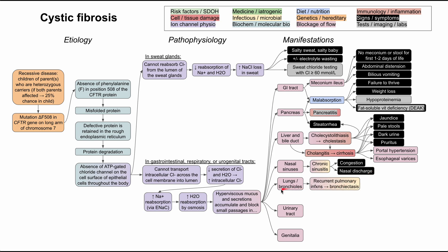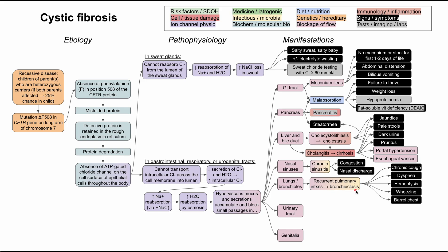The lungs are another major area affected by cystic fibrosis. It's typically the bronchioles that are involved, and you end up with recurrent pulmonary infections — bronchitis, typical and atypical pneumonias. Over time, this can lead to bronchiectasis, essentially chronic mucus plugging of your lungs, causing a nasty chronic cough, shortness of breath, coughing up blood, and wheezing. Because bronchiectasis is an obstructive lung disease similar to COPD, the patient can even develop a barrel chest over time.